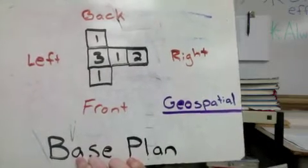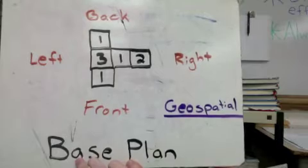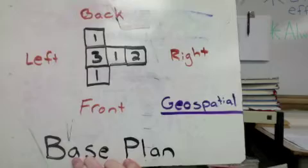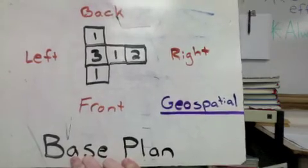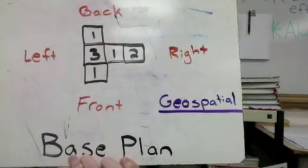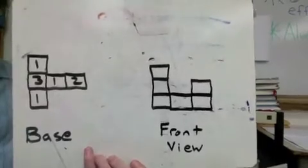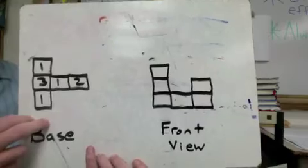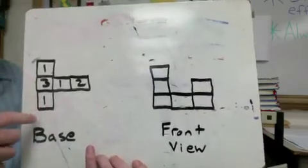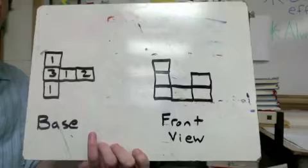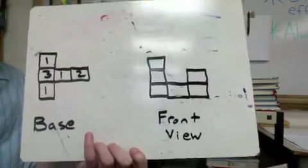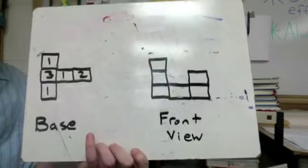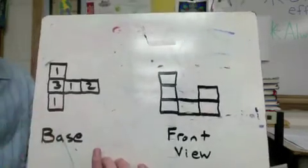From the base plan, we're going to move to different views: the front view, the right view, the back view, and the left view. We're going to take the exact same base plan and look at what each of those views looks like. I'm going to stack the correct number of cubes on each spot and look at it from each direction.